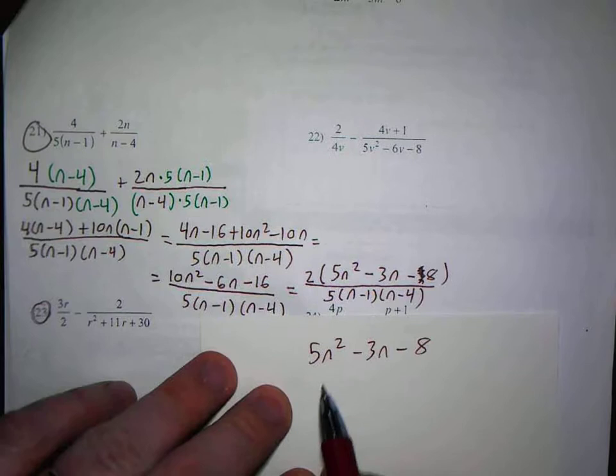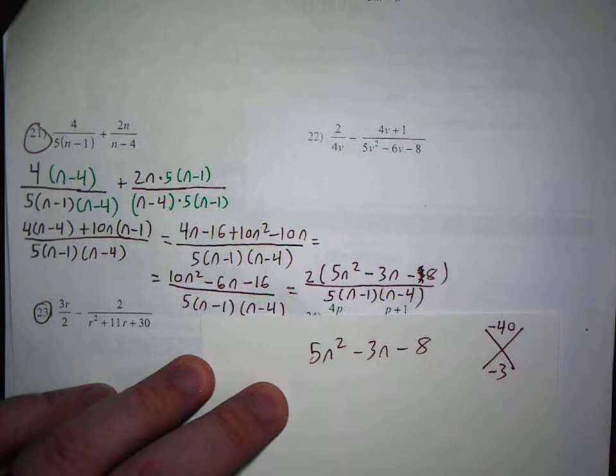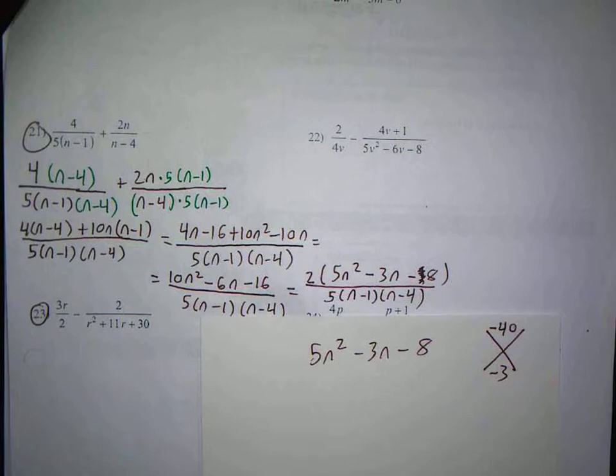It's a trinomial quadratic. A is not 1. That's where you take 5 times negative 8 and get negative 40, and then negative 3. So you're going to ask yourself, are there two numbers that multiply to negative 40 but add to negative 3?